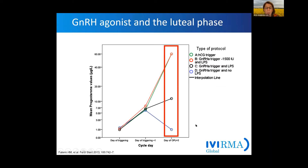What happens when we trigger with a GnRH agonist? This is a study from Professor Fatemi from when he was in Brussels. They compared patients — each patient was their own control from an oocyte donation program, undergoing consecutive stimulation cycles triggered differently. When hCG is included in the trigger, either alone or combined with an agonist, we achieve high progesterone levels five days after oocyte collection. However, if we give only a GnRH agonist with no luteal phase support, the progesterone level is very low. Even with GnRH agonist trigger plus luteal phase support, we did not reach the progesterone levels achieved when hCG was involved in triggering.